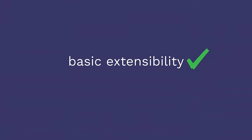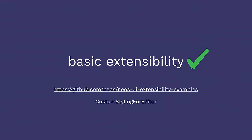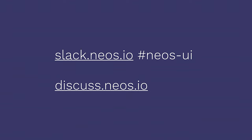So what we've now seen is basic CKEditor extensibility, and you can extend this example to all kinds of different CSS classes, paragraph styles, and so on. To get you started, this is all part of a Git repository on Neos UI extensibility examples, called custom styling for editor. If you check out the repository you will find this part there. If you have any questions, hit us on Slack on the Neos UI channel or on discuss, and we are really, really happy to help you get started. We covered only the basics, so if you need to build something more complex you will have to refer to either CKEditor 5 documentation or Neos documentation.